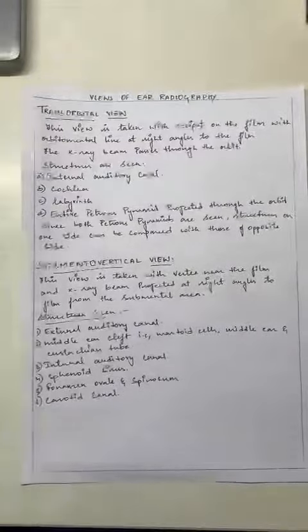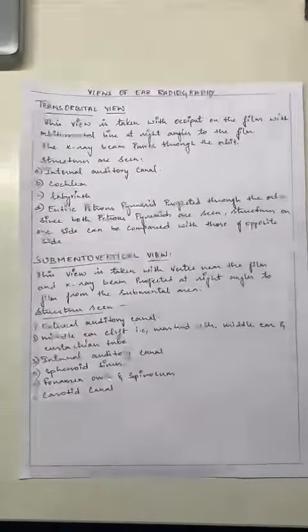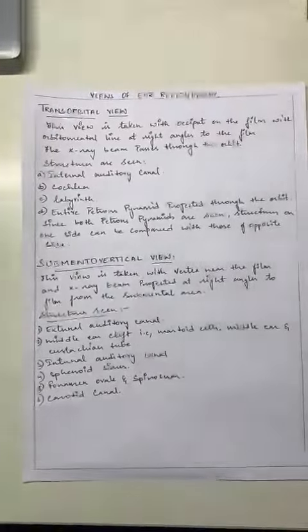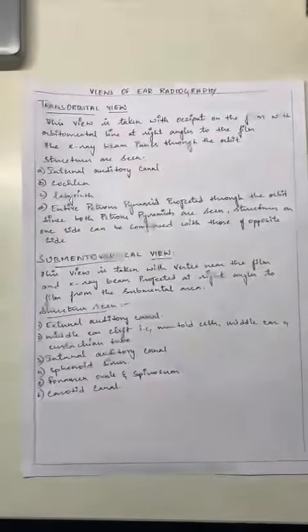The structures seen in this are: internal auditory canal, cochlea, labyrinth, and the entire petrous pyramid projected through the orbit. Next, the submental vertical view.